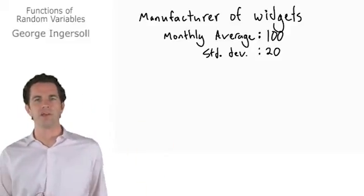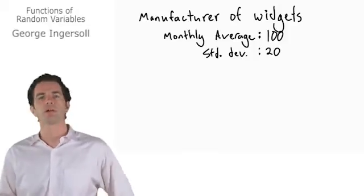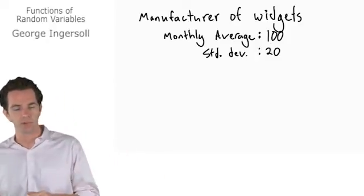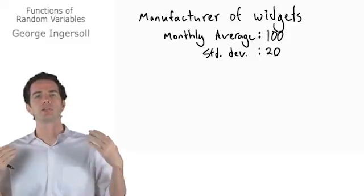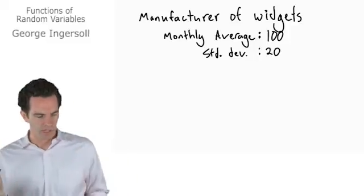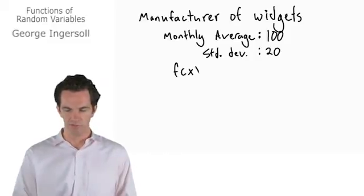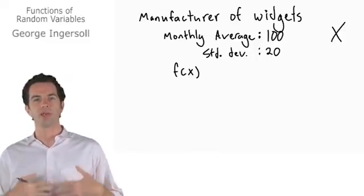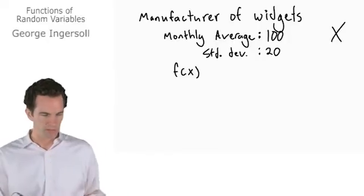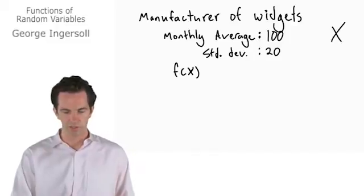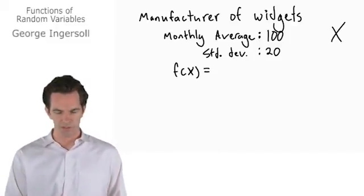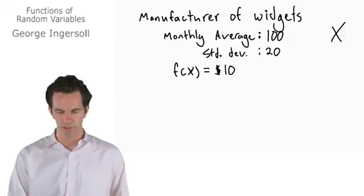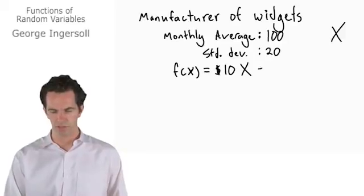That's due to various factors — holidays in the month, how productive our workers are, that sort of thing. So we average, month to month, manufacturing a hundred widgets, and we have a standard deviation of about 20. Now let's say we have a function that determines the cost to operate this factory. We'll call it f of X — and note X is capitalized since it's a random variable. This function is going to be the cost to run our factory, equal to $10 times X plus $1,000.